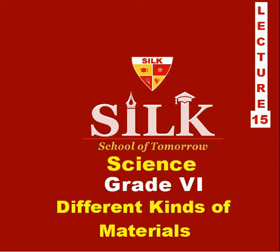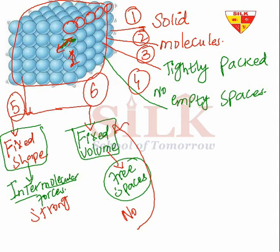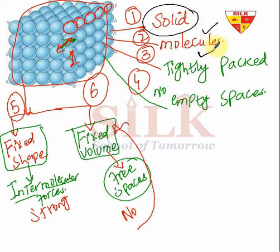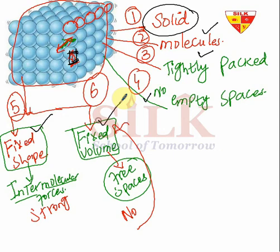In the last lecture, what did we study? First of all, we studied matter in three states: solid, liquid, and gas. We explained solid — the molecules are tightly packed, very close to each other, with no empty spaces between them. This is why solid has a fixed shape and a fixed volume.